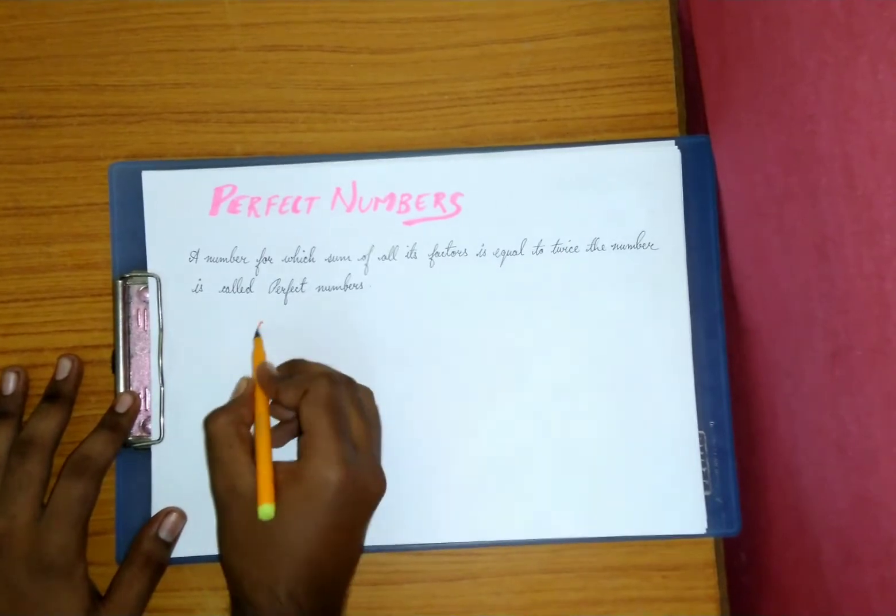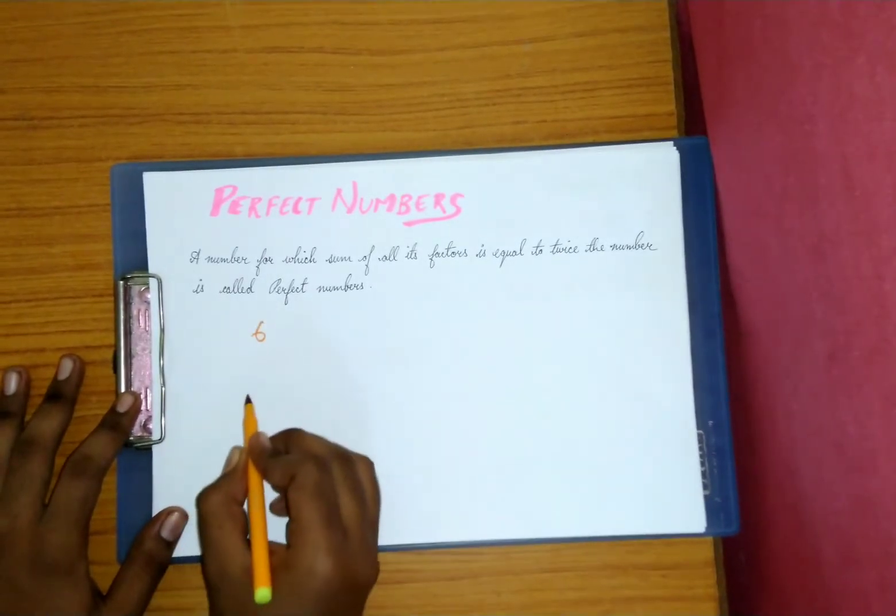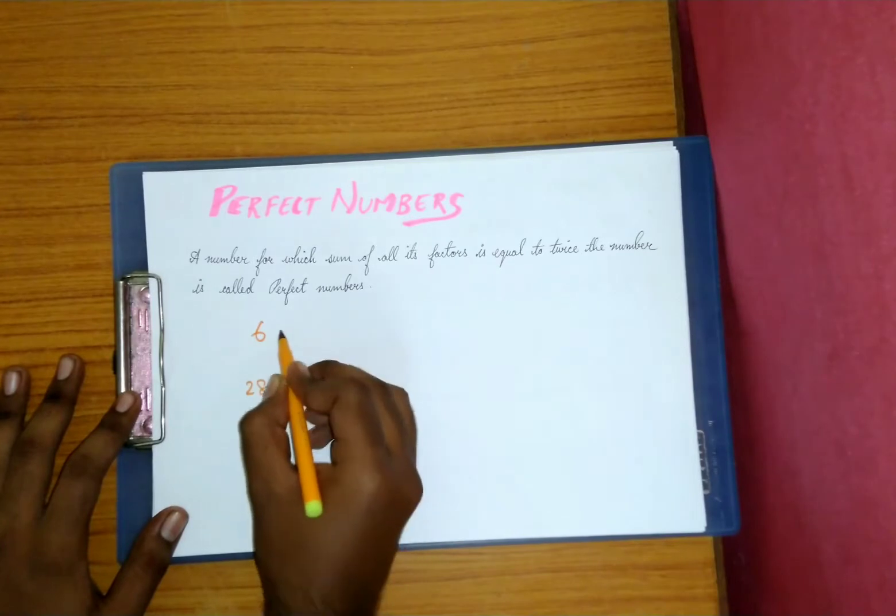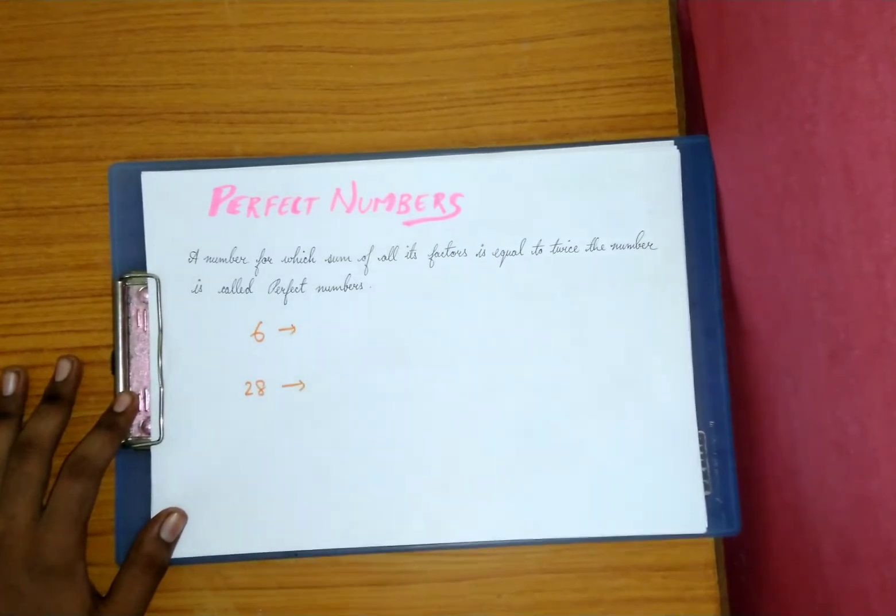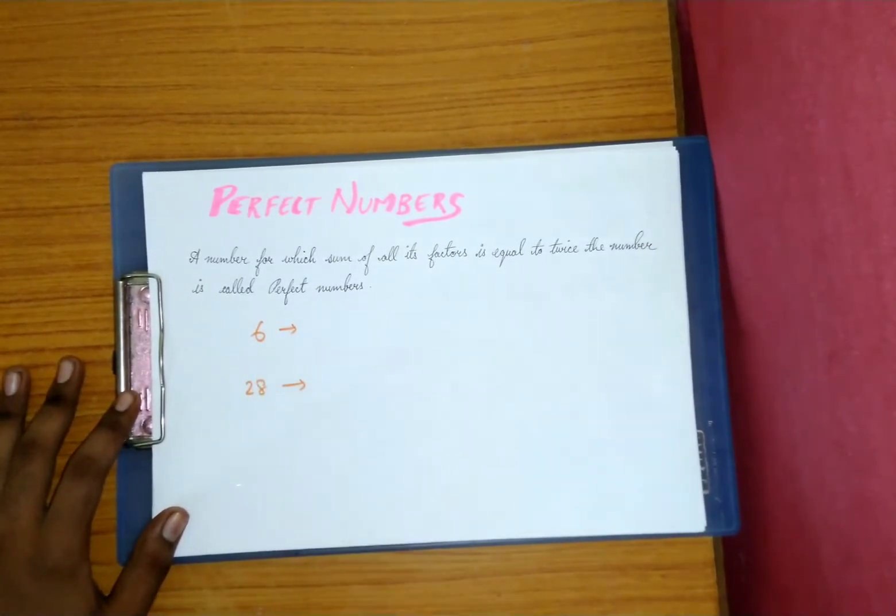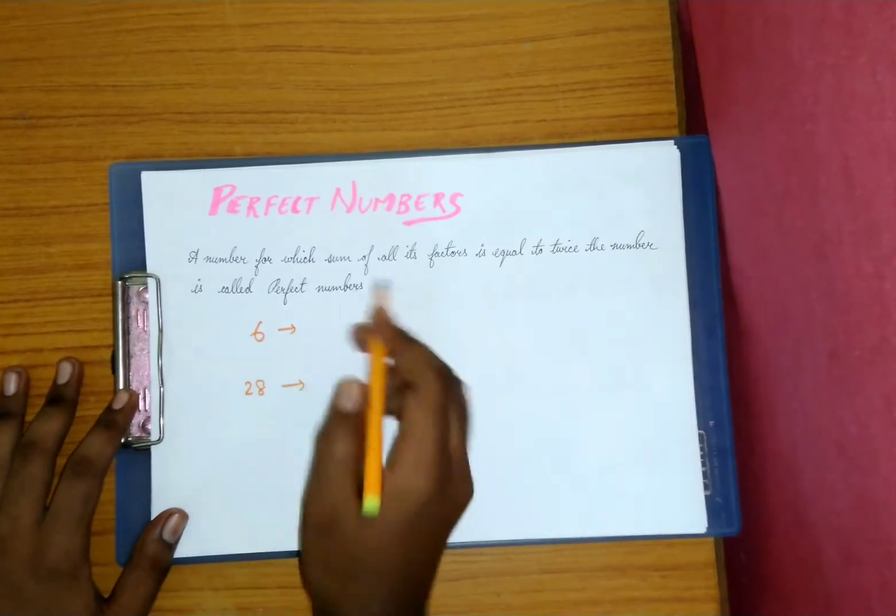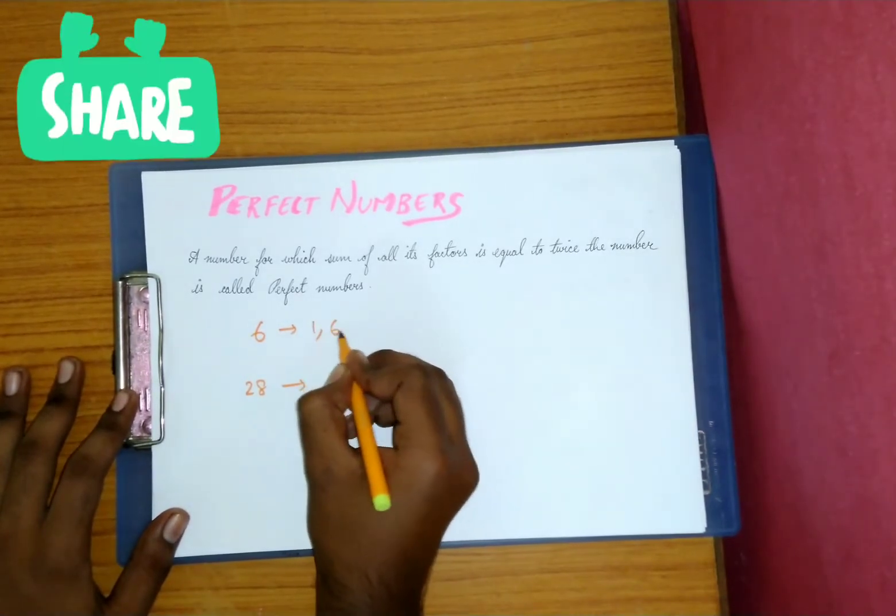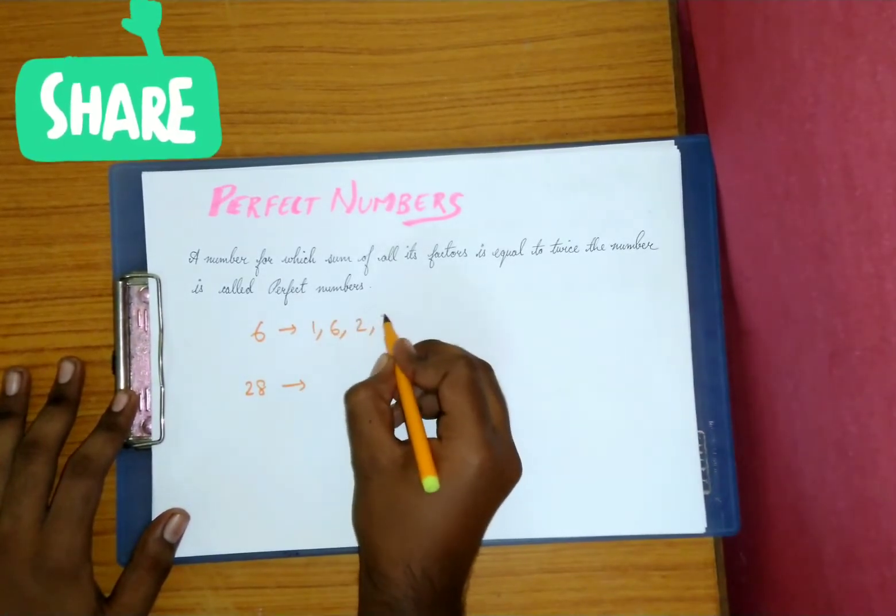For example, we'll take 6 and 28. So first we'll write the factors of these two numbers. Six factors will be 1, 6, 2, and 3.